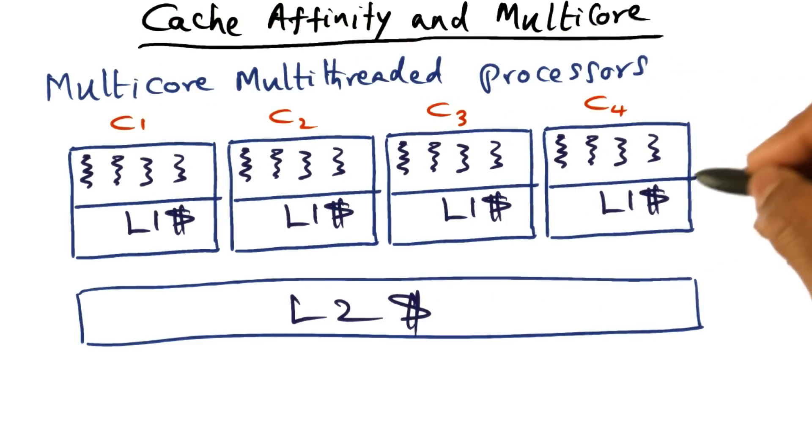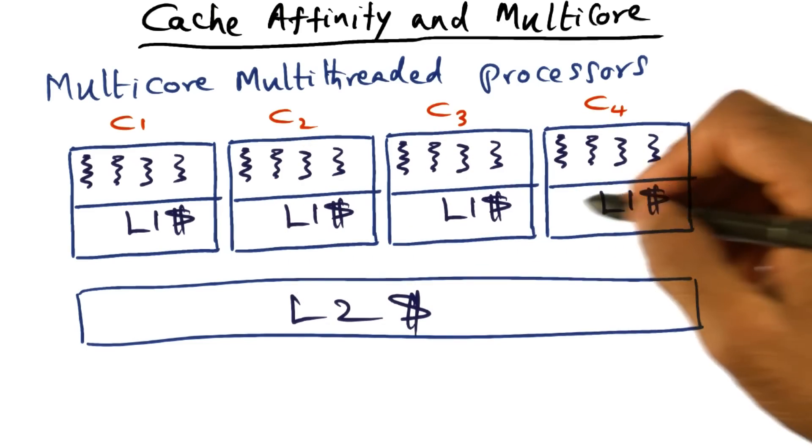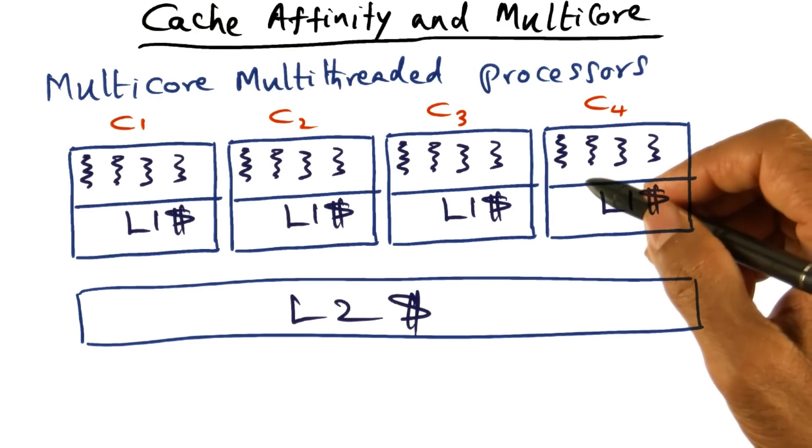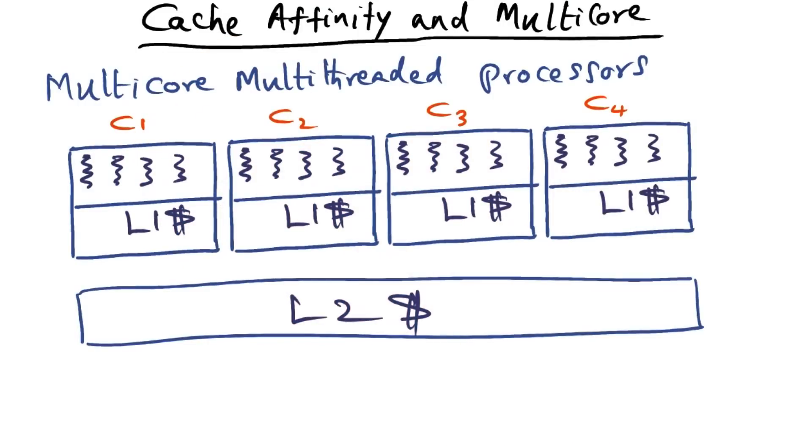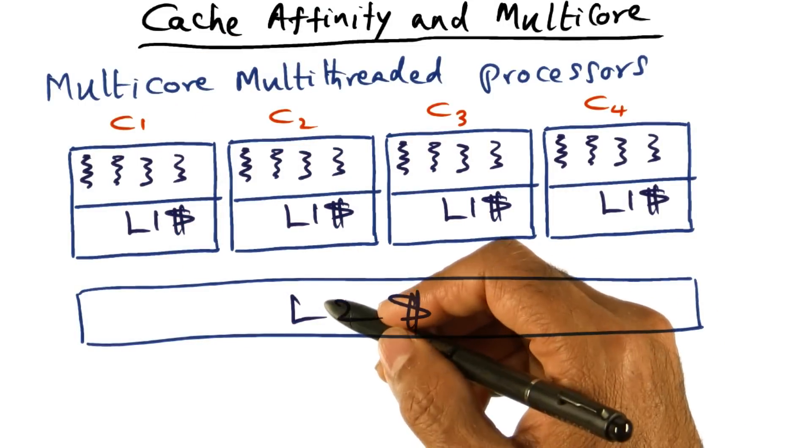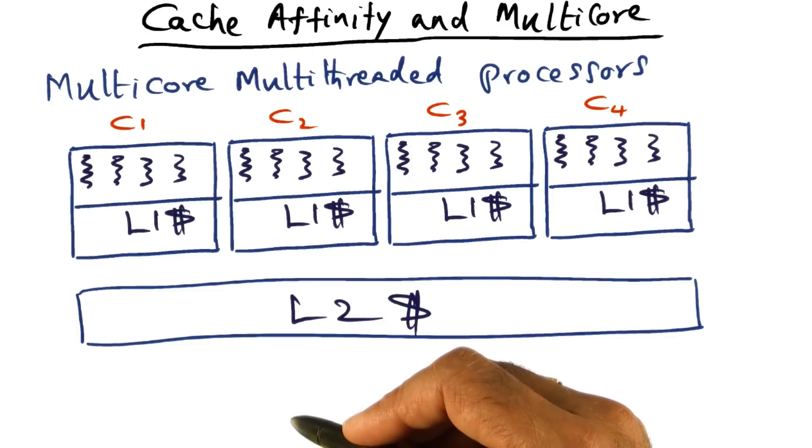if you just take the universe of all the threads that are currently scheduled by the operating system to run on all these four cores, you want to make sure that the working set of all these threads are likely to be found in the L2 cache. Because if you're missing the L2 cache, bad news, right? Because then you're going outside the chip, and that's a very long latency memory operation.